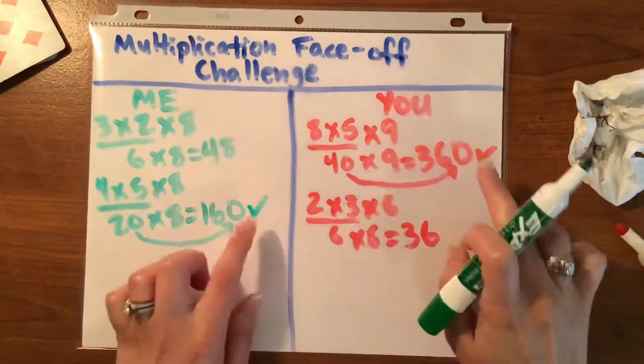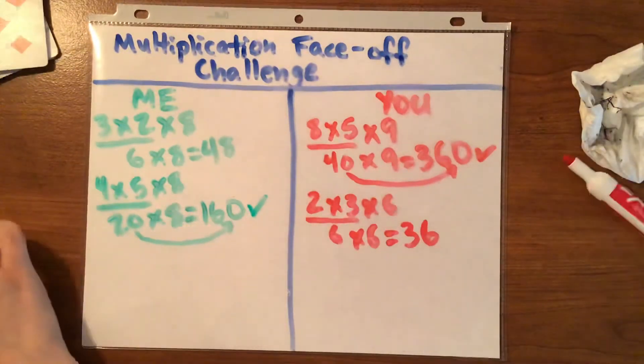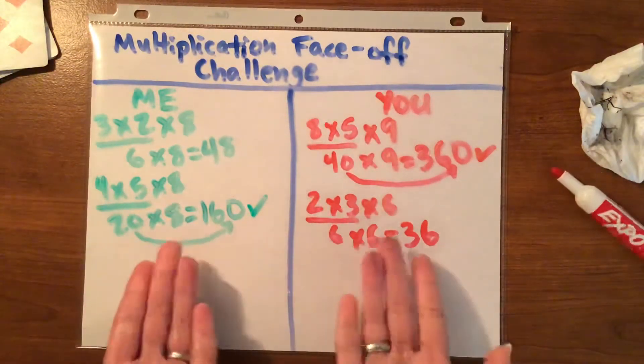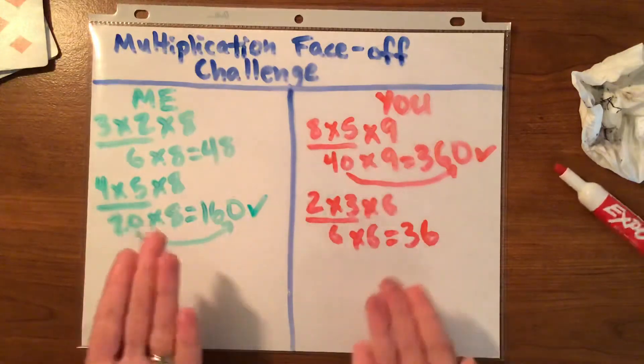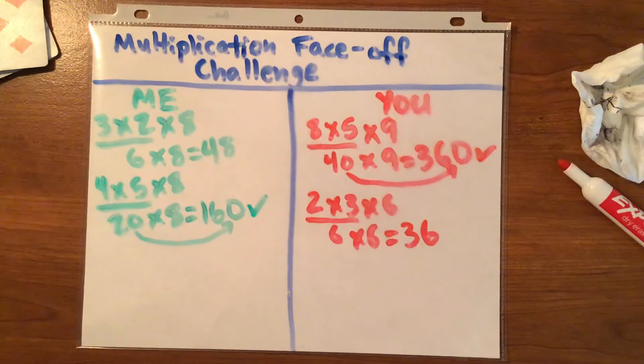And so, right now, we're tied on points. The next round will determine who got the point. Unless, by chance, we got the same product. Then we'd have to do a toss-up, just a tiebreaker, to see who won both points.